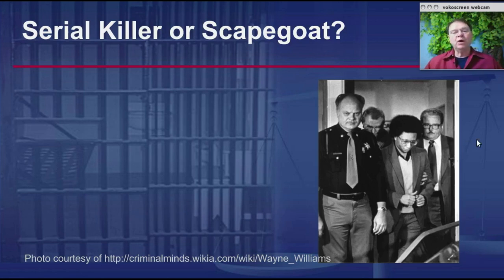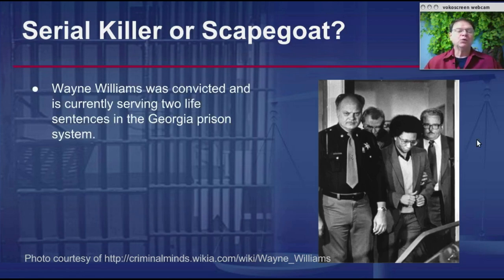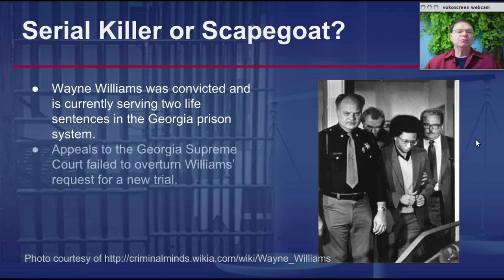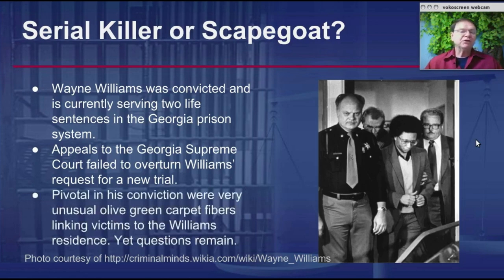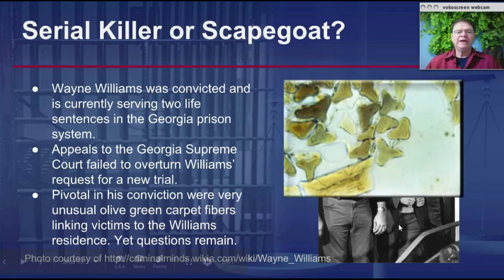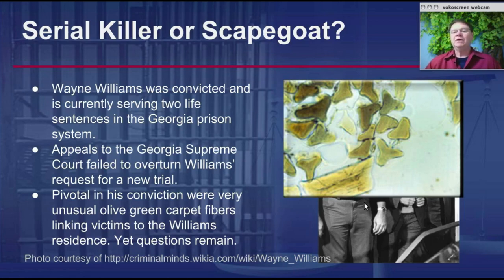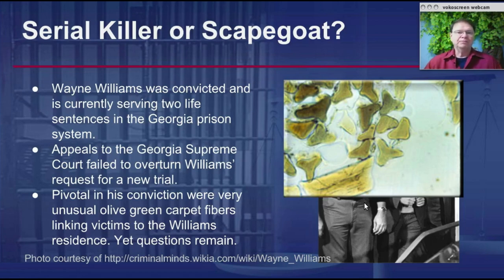Secondary transfer means you don't necessarily have a direct transfer from the perpetrator to the crime scene, to the victim, or vice versa — a third object could be involved, complicating interpretation. So we're back where we started: was Wayne Williams a serial killer or just a convenient scapegoat? He was convicted and is currently serving two life sentences. Appeals to the Georgia Supreme Court have failed to overturn his request for a new trial. Pivotal in his conviction are these very unusual green carpet fibers linking the victims to the Williams residence.